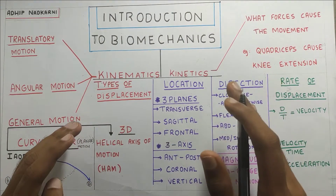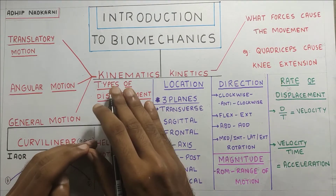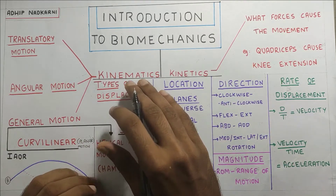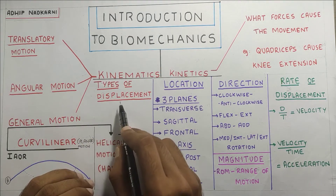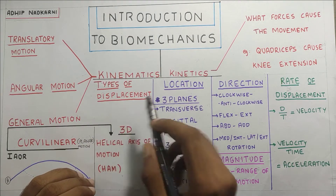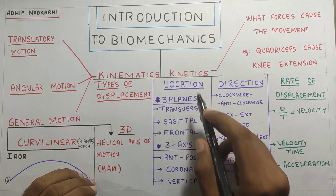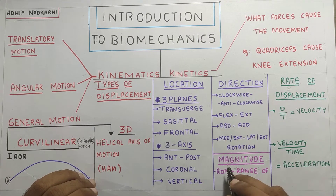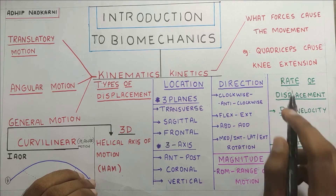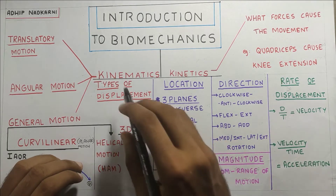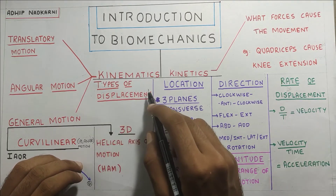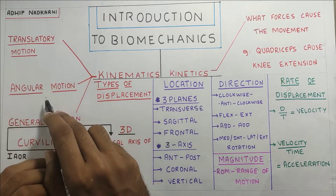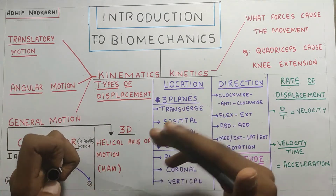In this introduction to biomechanics, we will talk about kinematics and kinetics. Under kinematics we will talk about types of displacement, location of displacement, direction of displacement, magnitude, and rate of displacement. Starting with type of displacement, there is translatory motion and angular motion, which are the two types of motion.